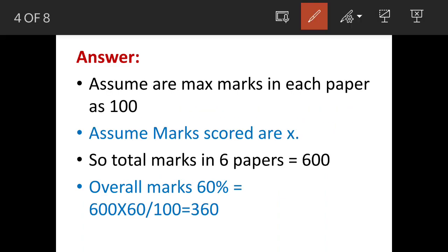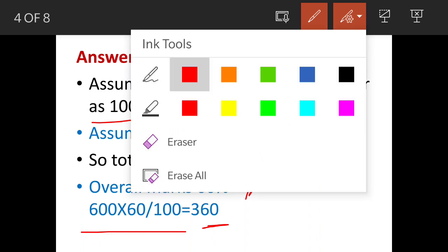Now let us assume maximum marks for each paper are 100 and individual paper marks obtained are X. So total marks for six papers will be 600, that is 100 into 6, and 60 percent of 600 will be 360. The calculation is shown here.